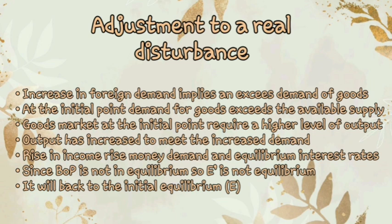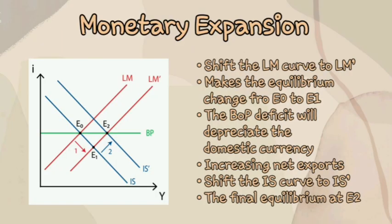An expansionary monetary policy shifts the LM curve to LM prime, moving equilibrium from E0 to E1. But since exchange rates are now flexible, we have a different situation. The balance of payments deficit will depreciate the domestic currency, increasing net exports. Since foreign buyers can purchase more of our products with the same amount of money, the IS curve shifts to the right to IS prime. The final equilibrium is reached at E2, where at the same interest rate, production has increased greatly.